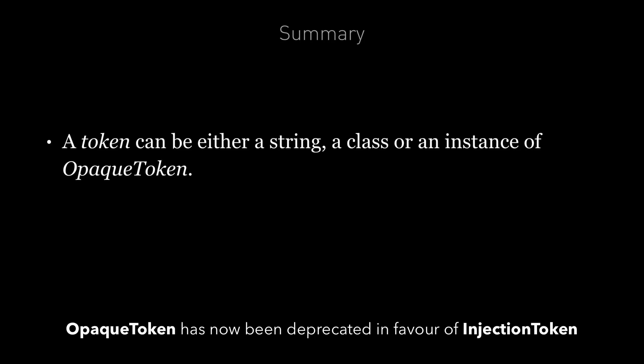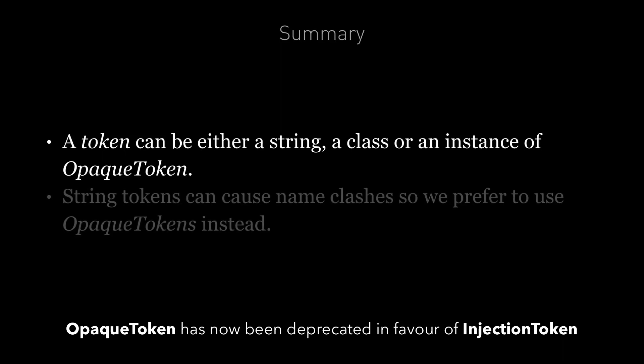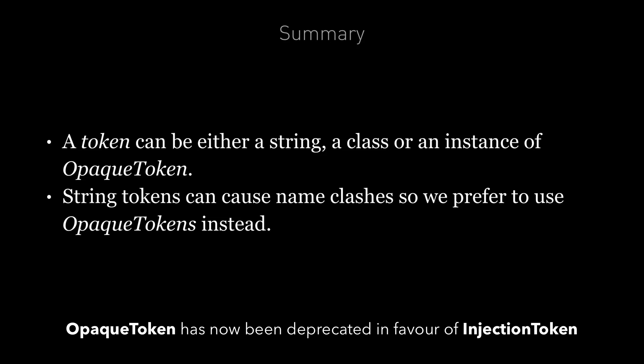In summary, a token can either be a string, a class, or an instance of an opaque token. String tokens can cause name clashes, so we prefer to use opaque tokens instead. In the next lecture, we're going to look at how we can actually configure dependency injection in Angular.